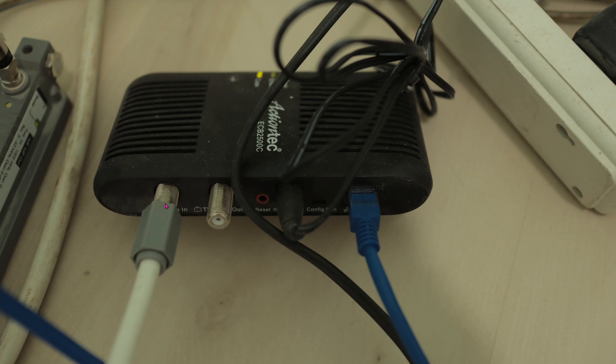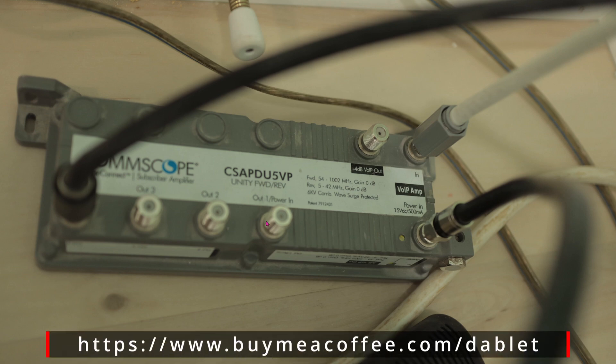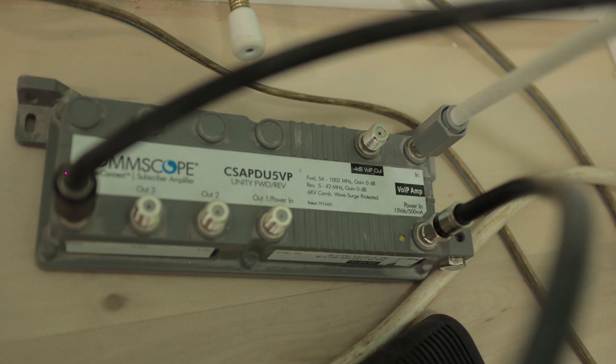And here you have this coax out. The coax going out of the mocha goes into this Comscope coax multiplexer. Now this Comscope outputs internet via coax into multiple other rooms as you can see here. So let's take an example: this black coax is now feeding internet into another room via coax cable.